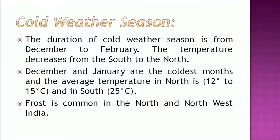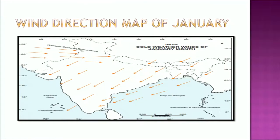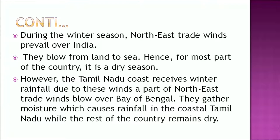The cold weather season lasts from December to February. Temperature decreases from south to north — December and January are the coldest months, with the average temperature in the north being 12 to 15 degrees centigrade and in the south about 25 degrees centigrade. Frost is common in north and northwest India. During this season, north-east trade winds prevail over India, blowing from land to sea, making it a dry season for most of the country. However, the Tamil Nadu coast receives winter rainfall because a part of the north-east trade winds blows over the Bay of Bengal, gathering moisture which causes rainfall in coastal Tamil Nadu.